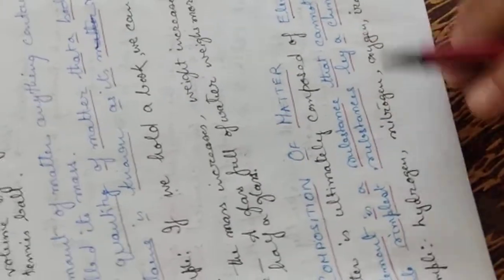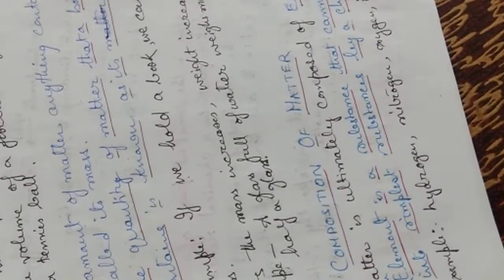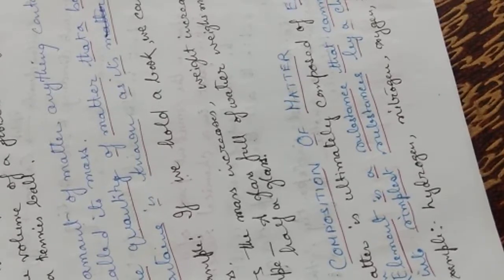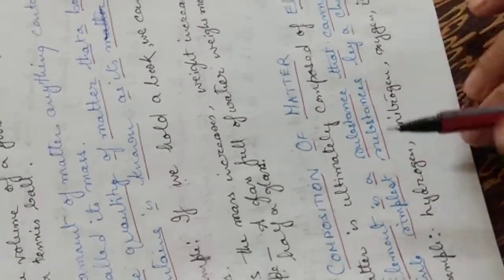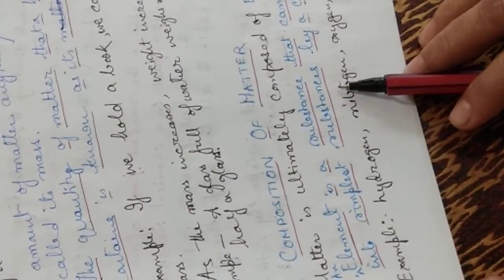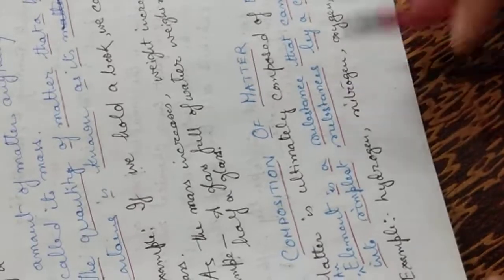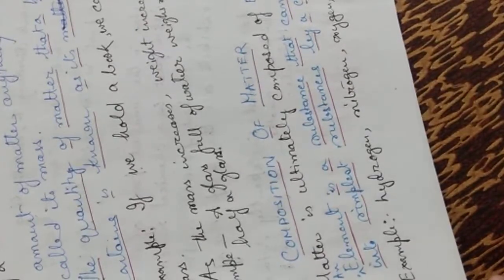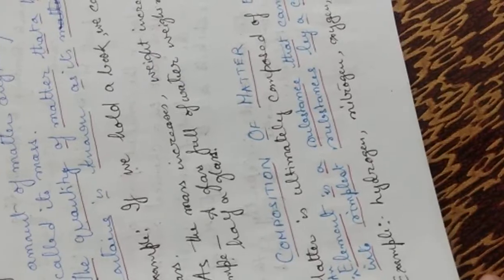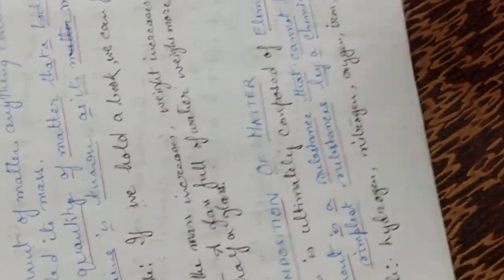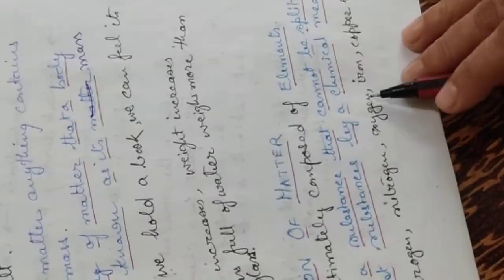What is the composition of matter? What is matter composed of? It is composed of elements. What is an element? An element is a substance that cannot be split into simpler substances by any chemical means. For example, hydrogen, nitrogen, oxygen, iron, copper, etc. are elements.